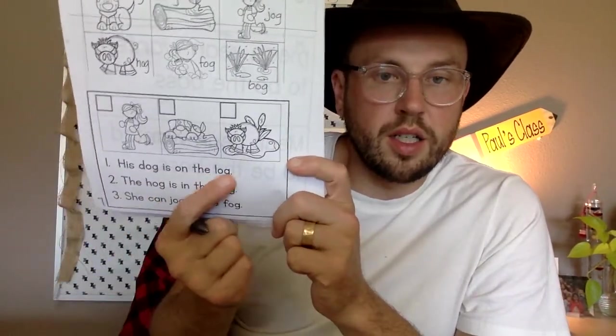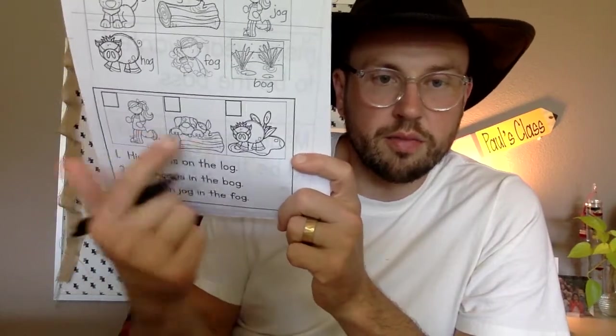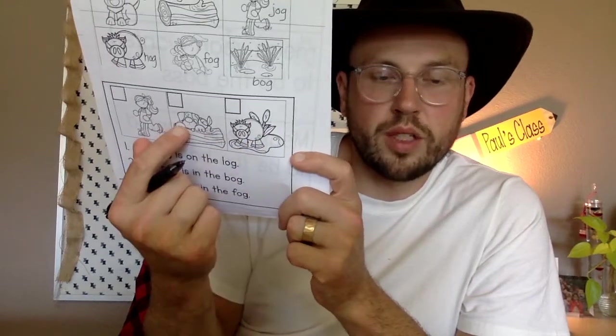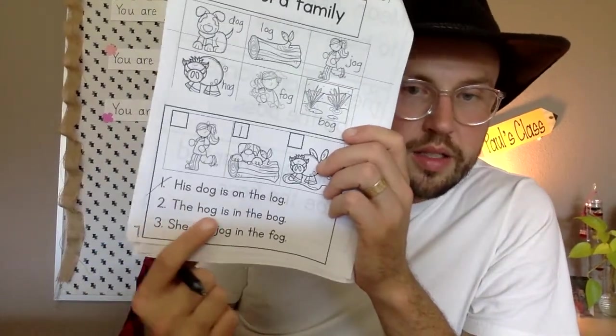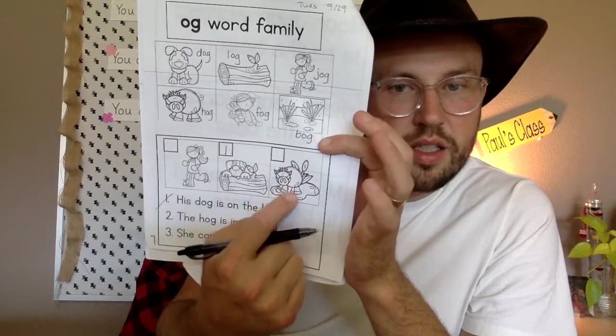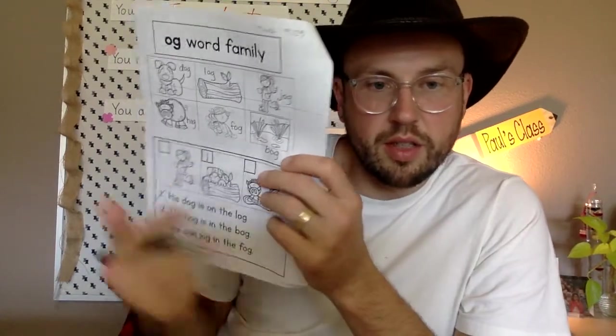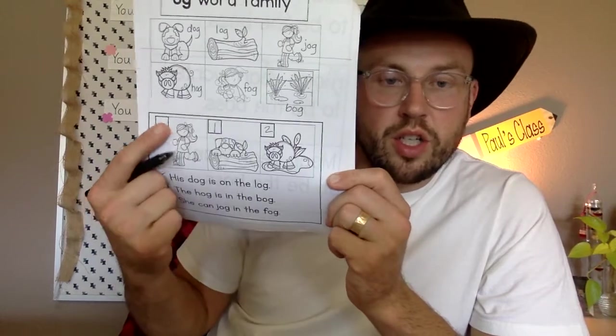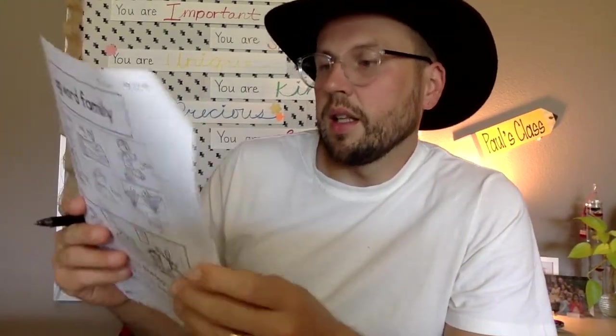Number one: 'His dog is on the log.' Here's a dog on a log — yes, that's number one. Number two: 'The hog is in the bog.' Here's a hog in the bog — that's number two. Then the last one: 'She can jog in the fog' — she's jogging — that's number three.